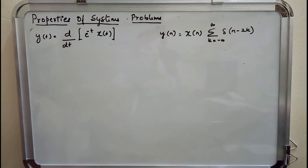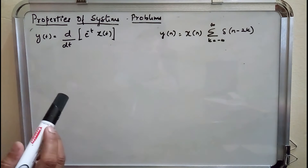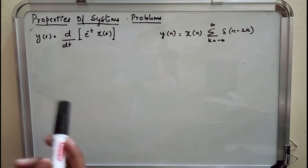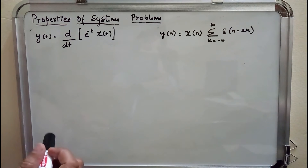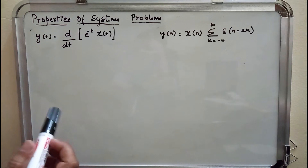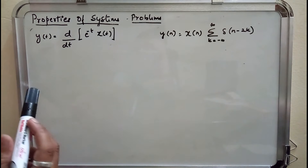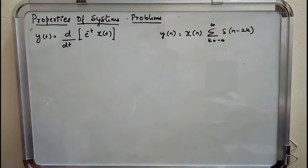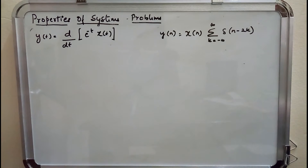Today we will be discussing the properties of systems and I will not be going in depth about solving individual problems. Rather we will be analyzing individual systems by inspection method. The first problem here is y(t) = d/dt of e^(-t) · x(t). This is the input-output relationship.